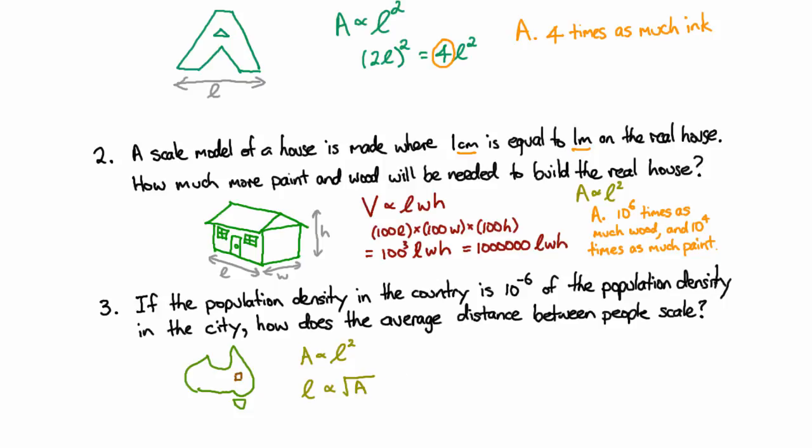So then we realize that if the area has gone down by a factor of 10 to the minus 6, then the length must have gone down by the square root of that. And since the square root of 10 to the minus 6 is 10 to the minus 3, what that means is that people are a thousand times further apart in the country than they are in the city. I figured out which way around to put that, just from common sense. Obviously, if the density goes down, then the distance between people on average is going to go up.